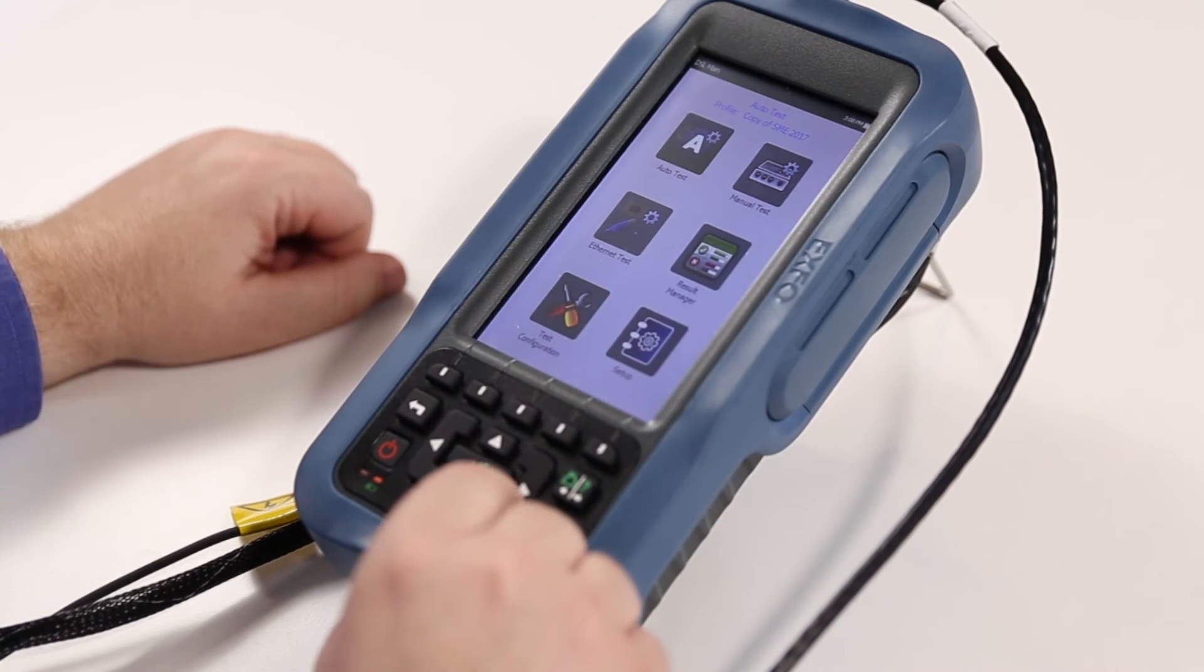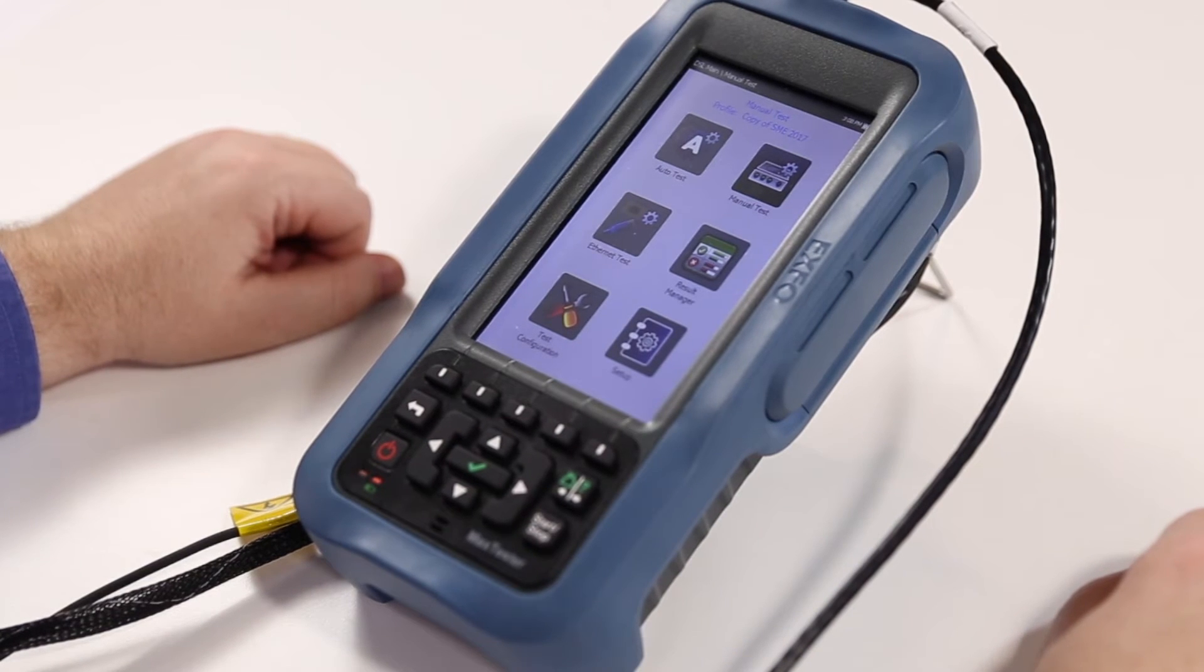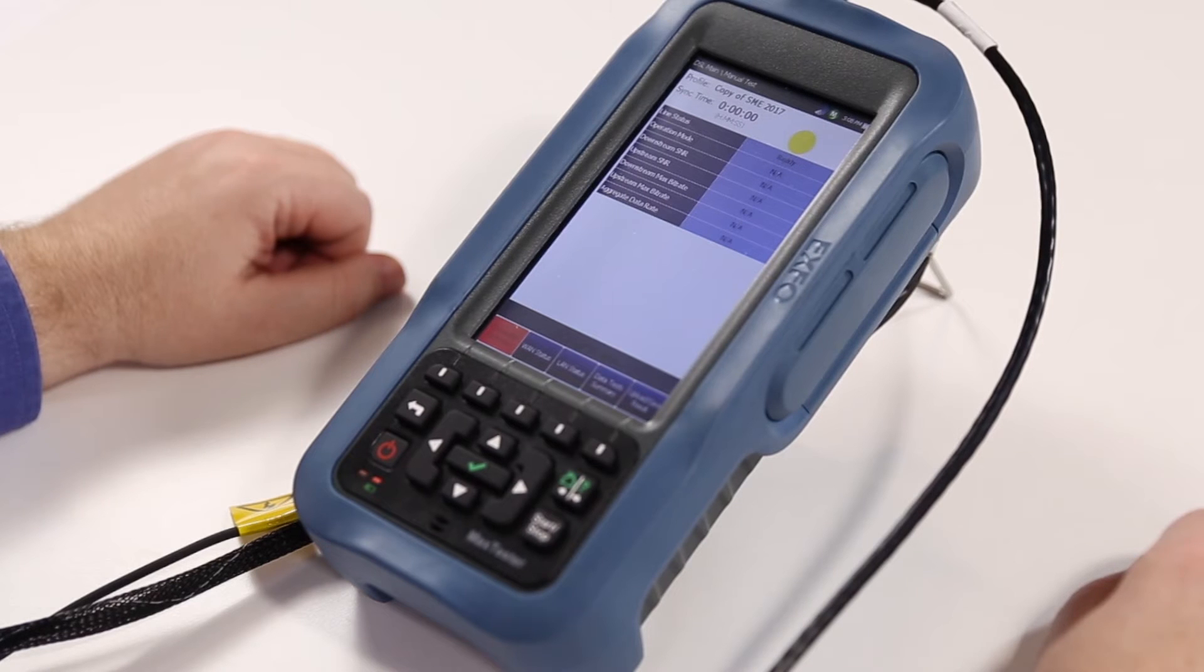By selecting the manual test in this particular scenario, we're going to be able to synchronize with the G-Fast DPU. Once we've achieved synchronization with the G-Fast DPU,